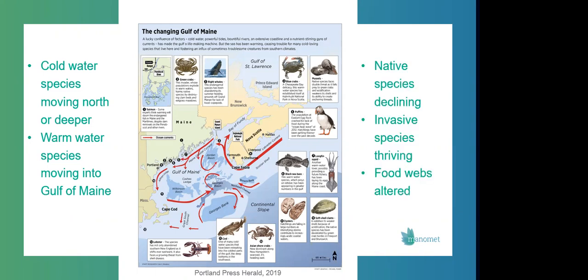So things like squid and blue crabs and black sea bass that we didn't used to have in the Gulf of Maine. But digging a little deeper, we're also seeing many native species declining or just disappearing. Things like northern shrimp, which once supported a very important fishery in the Gulf of Maine. We're also unfortunately seeing many invasive species like the green crab thriving in these warming waters. And ultimately, all of these changes are greatly altering food webs in the Gulf of Maine.